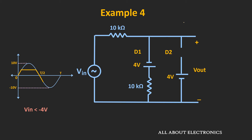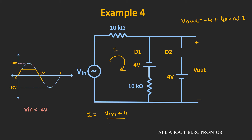Now the output voltage Vout can be given as minus 4V plus the voltage drop across this 10kΩ resistor. So if we assume I is the current flowing through the circuit, then the output voltage Vout is equal to minus 4V plus the voltage drop across this 10kΩ resistor. First, let us find out this current I. This current I can be given as Vin plus 4V divided by the summation of these two 10kΩ resistors, that is equal to 20kΩ.